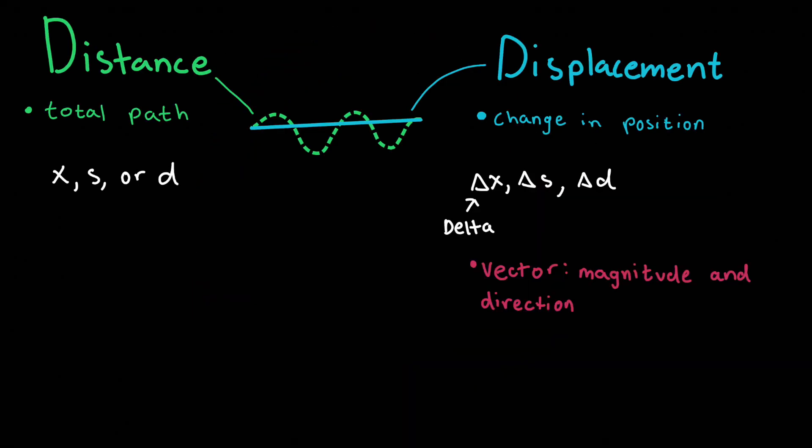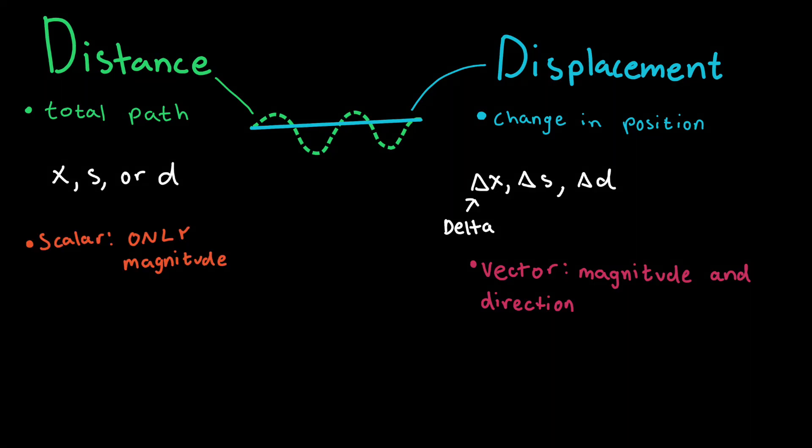Displacement counts as a vector, which is something that has magnitude and direction. Distance would be a scalar, since it only has magnitude.